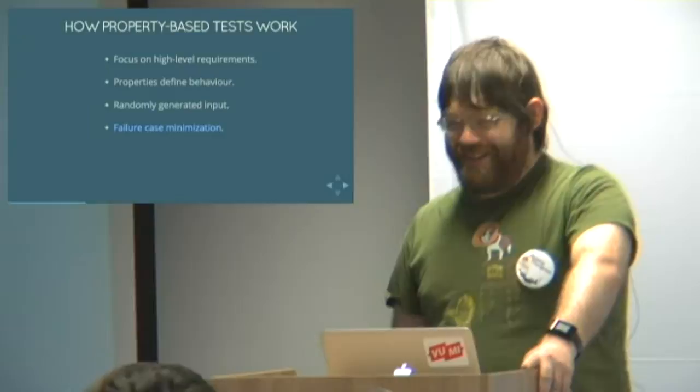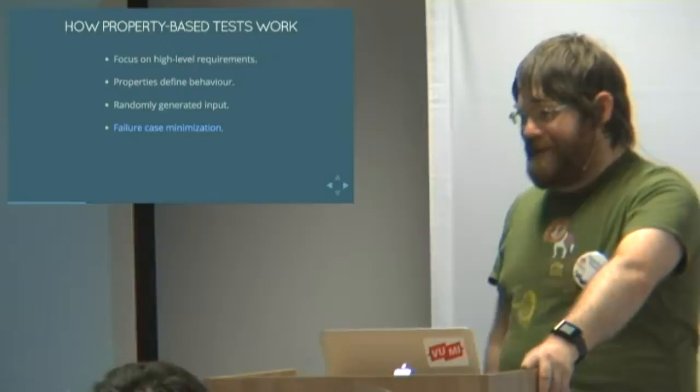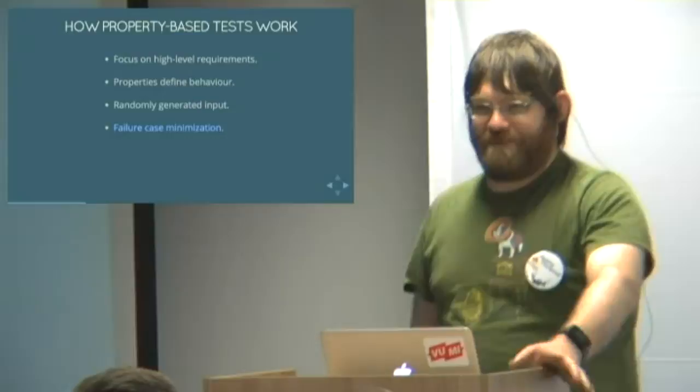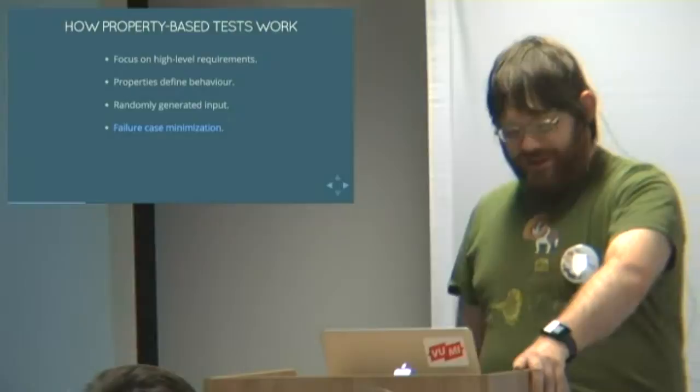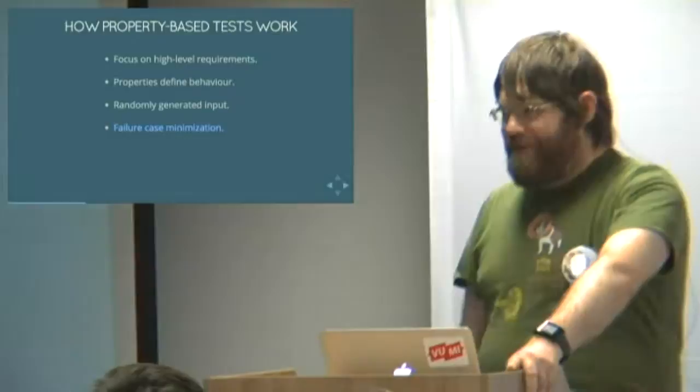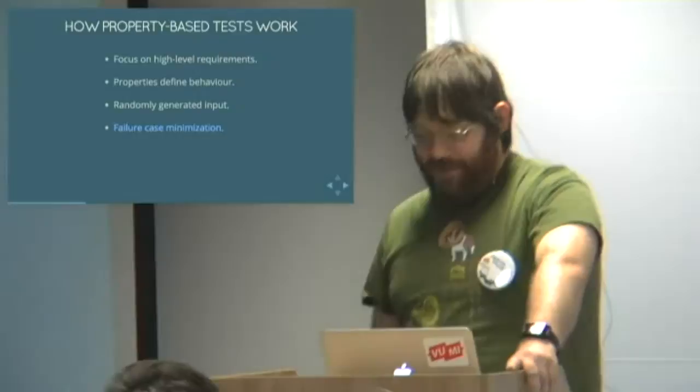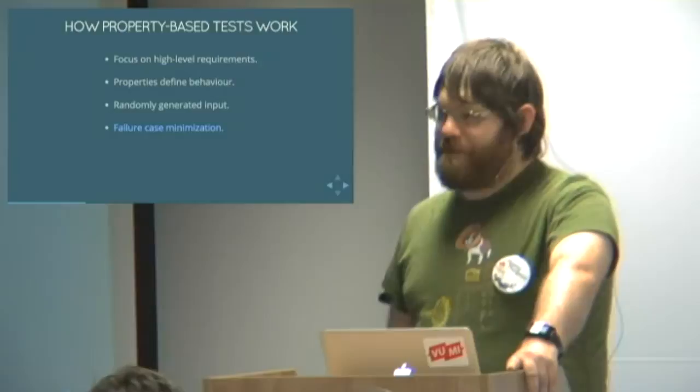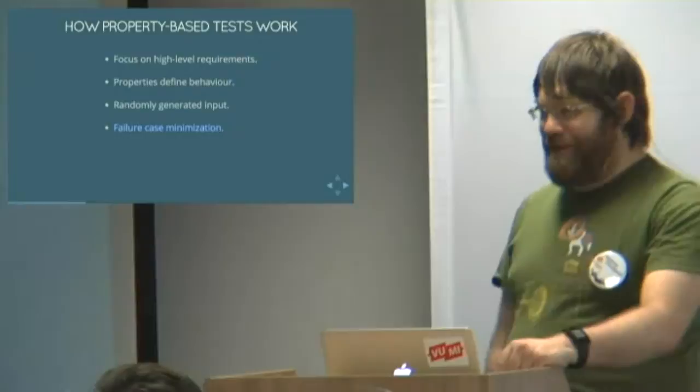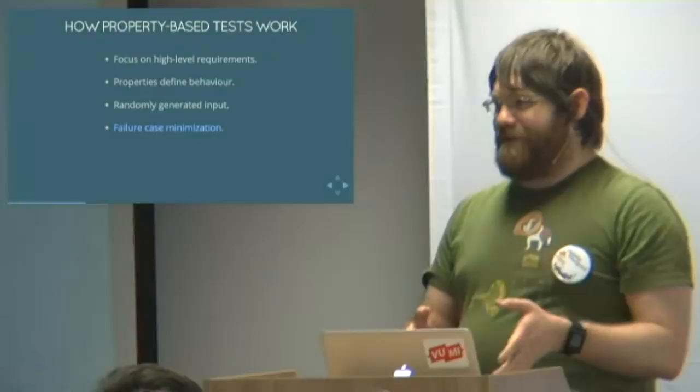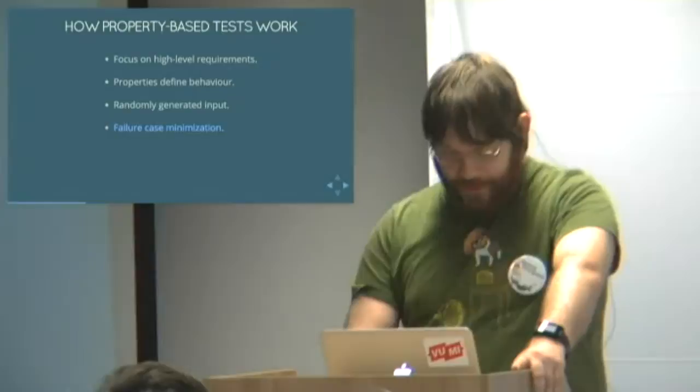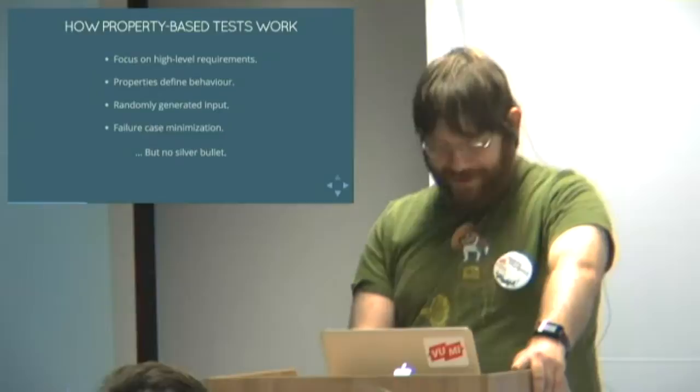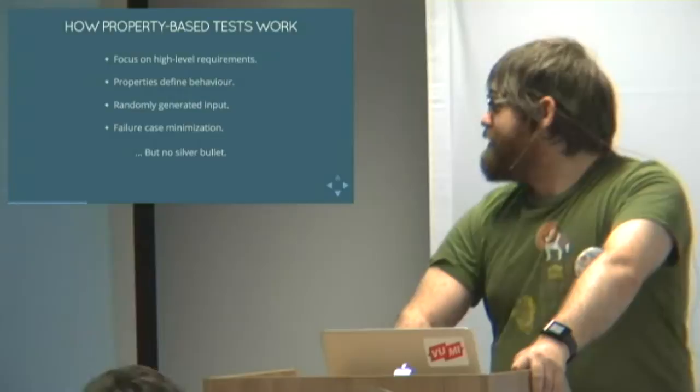Now randomly generated input means there's a lot of noise. If your property fails when you get a list with 10,000 items in it, is the failure because your input has 10,000 items or is it because two of the items in that list have some special thing that makes your code fail? So once your property test thing finds a property that fails, it'll take the input and it'll simplify it in some way and check again and then it'll give you something that's much smaller, which makes it much easier to debug. But it isn't a silver bullet.